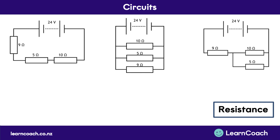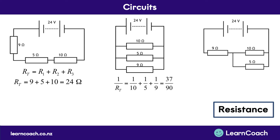Now we'll look at resistance. Resistance in a series circuit is the sum of all resistors — so R1 + R2 + R3 gives you the total resistance. Here, 9 + 5 + 10 gives us 24 ohms. Whereas in parallel circuits, the inverse of each resistor gives us the inverse of the total resistance. So 1/10 + 1/5 + 1/9 gives us 37/90, and the inverse of that equals 2.43 ohms — the effective resistance for this circuit. With the mixed circuit, it's a combination of series and parallel, so you use both equations to find the total effective resistance.